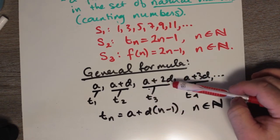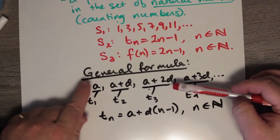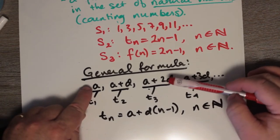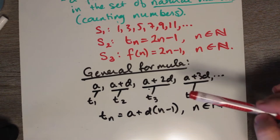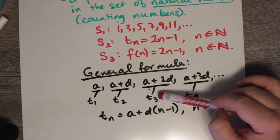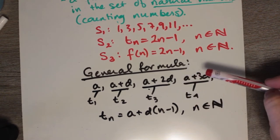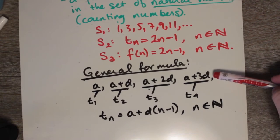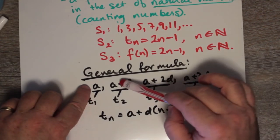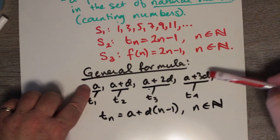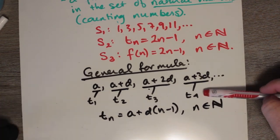Then we add D again. Compared with A, we're adding D twice, so that's A plus 2D — our T3. For the next term, compared with the first term, we're adding D three times: A plus 3D, and that's our fourth term.